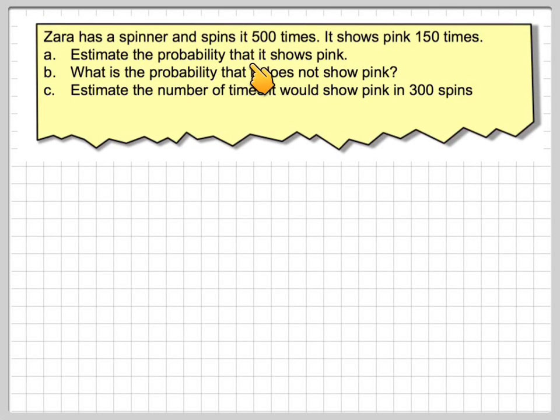Sarah has a spinner and spins it 500 times. It shows pink 150 times. Estimate the probability that it shows pink.